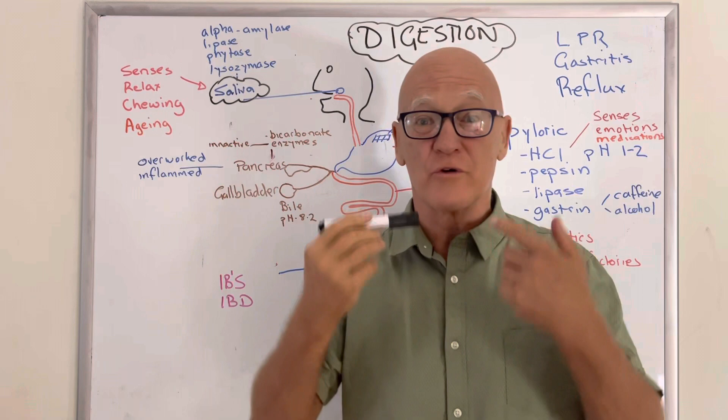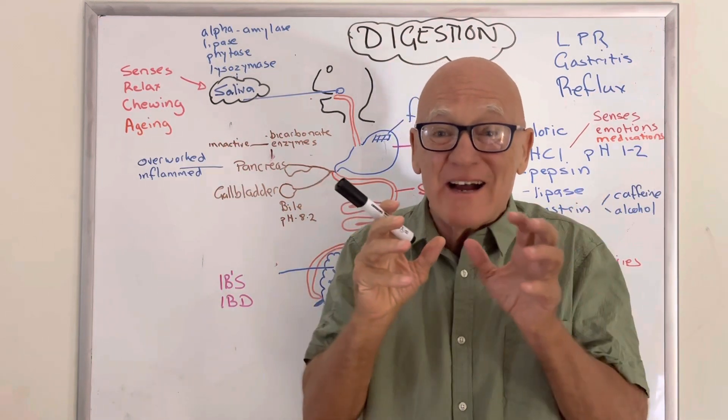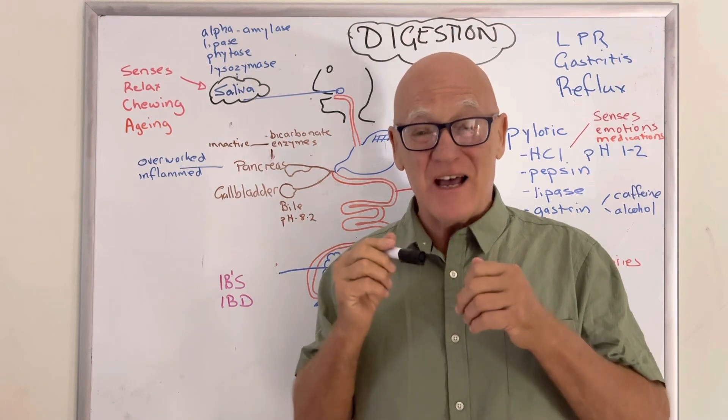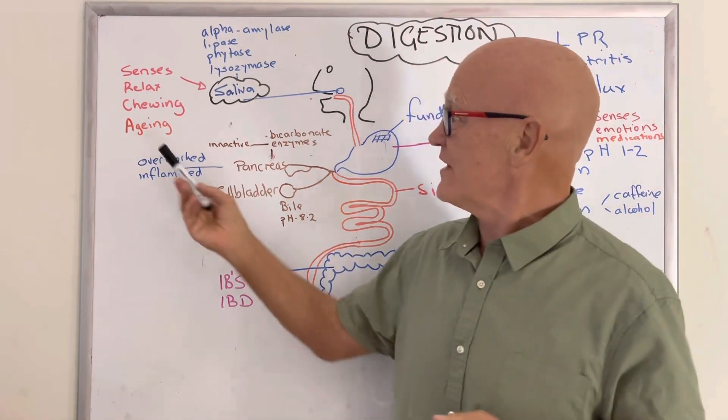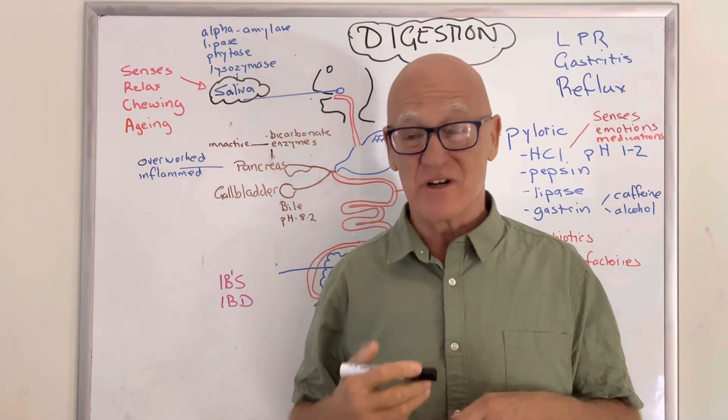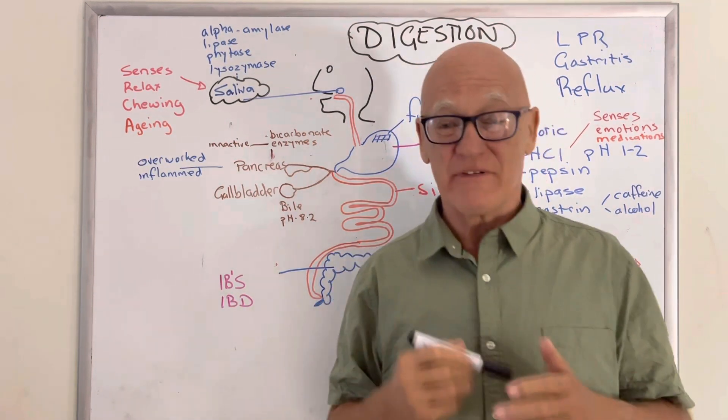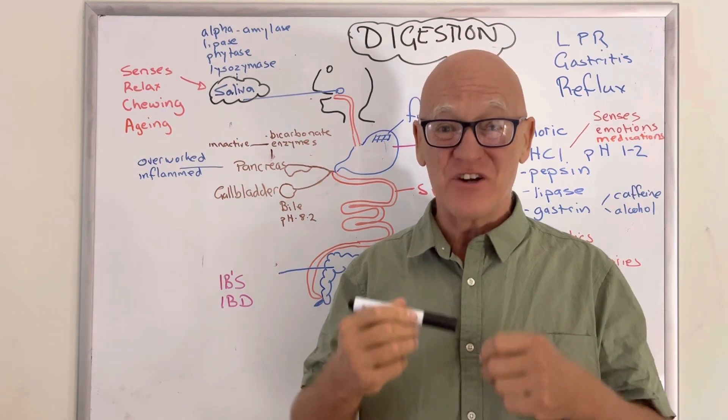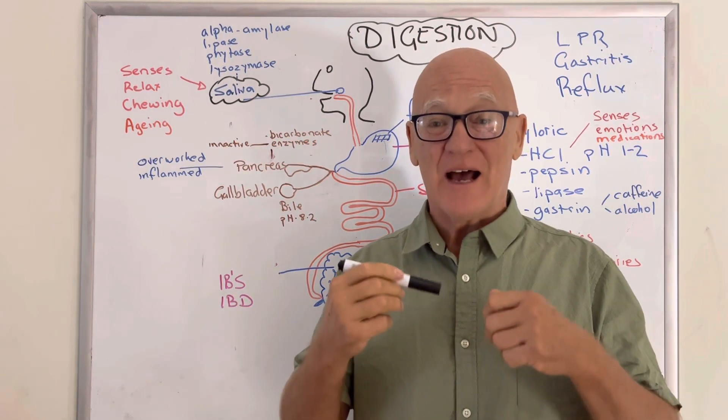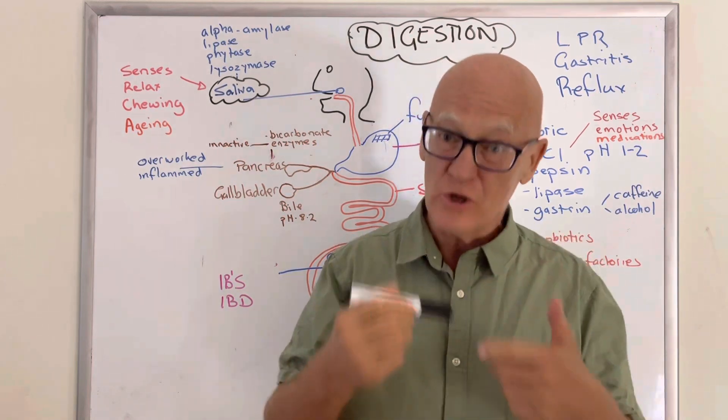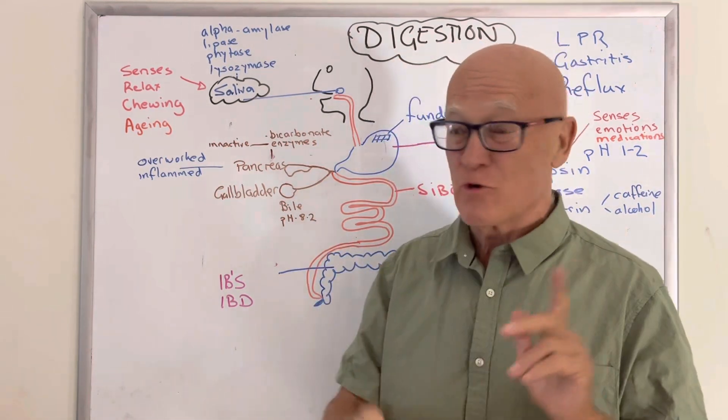So timing is a factor here. Chewing, obviously, the more you chew, the more saliva, the more you chew, the more you break down everything into smaller particles. Therefore it's much easier to digest. And then of course one of the other factors in saliva production, and in fact all digestive enzyme production, appears to be age. The older you get, the less efficient in producing these digestive enzymes. So as you age, you probably need to supplement with more digestive enzymes as a general rule.